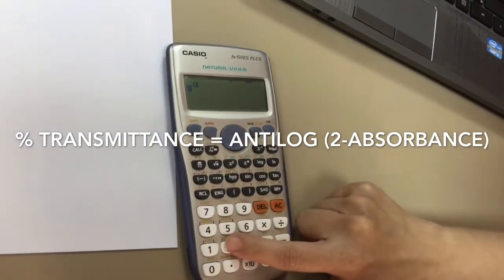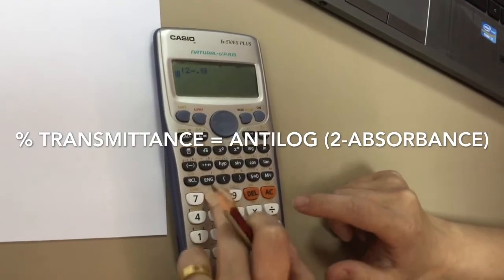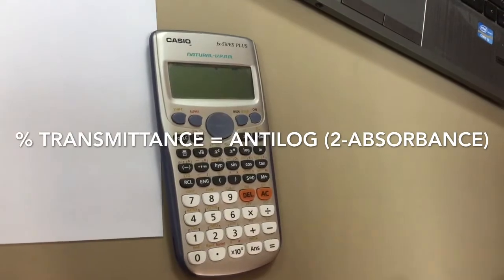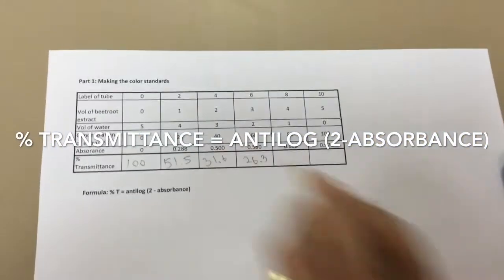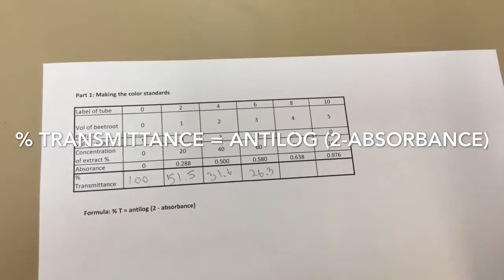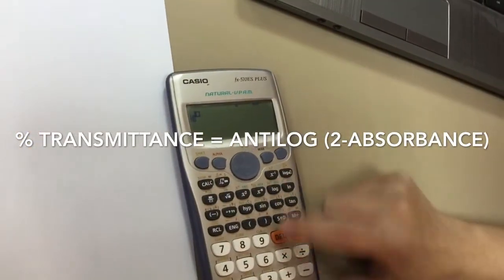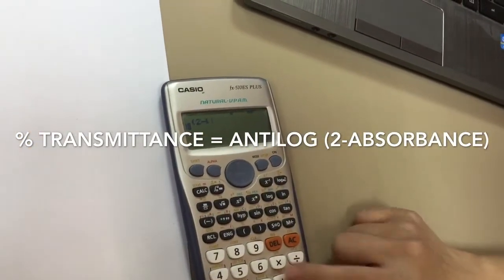To put that into a calculator, all we do is go shift, log, bracket, 2 minus, and then whatever the absorbance is, close the bracket, and press equals.